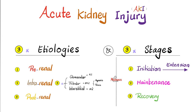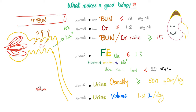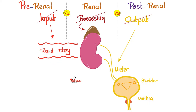The three stages of AKI are initiation, maintenance, and recovery. A good kidney keeps serum BUN below 18 and serum creatinine below 1.2, with a BUN-to-creatinine ratio above 15. It does not waste sodium — fractional excretion of sodium less than 1%, urine sodium less than 20 mEq/L. A good kidney concentrates the urine with osmolarity above 500, and urine volume between 1 and 2 liters per day. Post-renal azotemia is usually caused by an obstruction of the outflow.